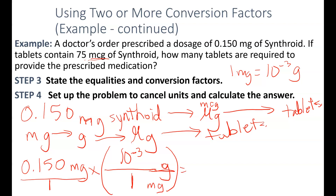Putting 0.150 over 1 so that our fractions are lined up and multiplying through, we get 1.50 times 10 to the negative fourth grams. The milligrams cancel out and we're left with units of grams. But we need micrograms to be able to use the tablet information, so we'll need to do another step converting grams to micrograms.